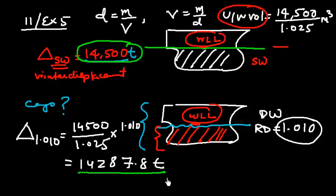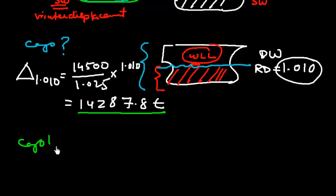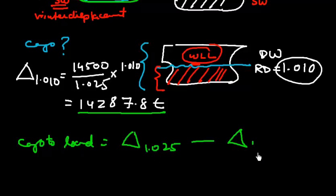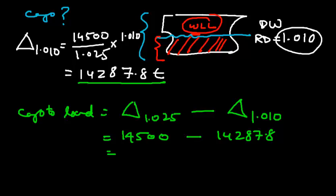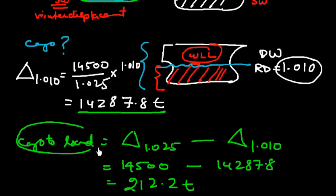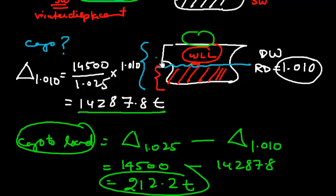The cargo to load is the difference between the two displacements: displacement in salt water (1.025) minus displacement in dock water. So 14,500 minus 14,287.8 equals 212.2 tons. At the berth we can load this much cargo, sinking to WLL, so that when the ship goes out to sea she rises to the winter load line. This is the answer to problem 11.